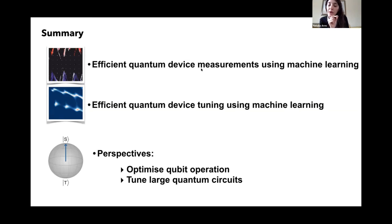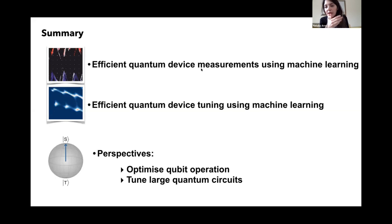We are limited by our measurement time and not by our computational time — it just uses a GPU. This is a very interesting point: if you were to use faster readout techniques, like the radio frequency techniques Lisa was pointing out, then your computation would need to be a lot faster to gain time. We didn't really optimize the computational time because our bottleneck was the measurement time. But of course, for fast readout techniques, you do have to optimize the computational time.